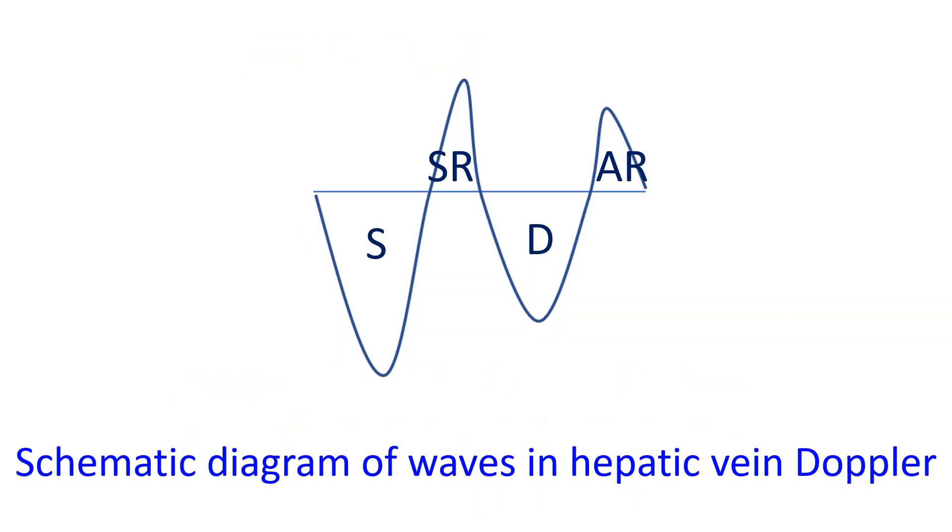Pulsed wave Doppler interrogation of hepatic vein flow is another method of assessing right ventricular diastolic function. Interrogation is done from the subcostal view. As in the case of other right-sided parameters, velocities are more in inspiration, hence averaging of 5 consecutive beats is recommended.